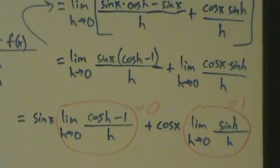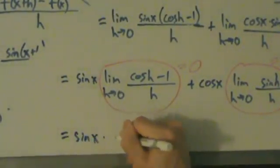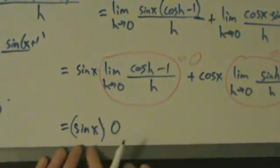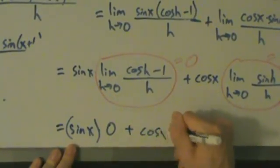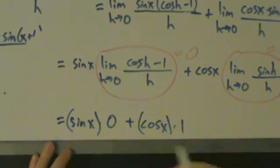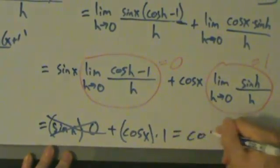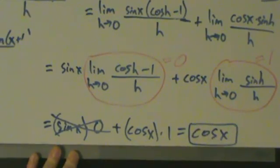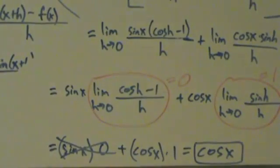So what we have is sine of x times 0, plus cosine x times 1. The first term zeroes out. Cosine x times 1 is just cosine x, and we're left with that. That's the proof that the derivative of sine of x is cosine x.